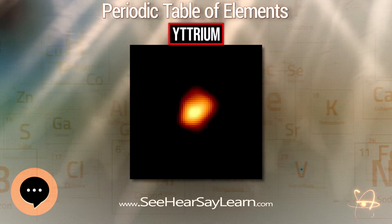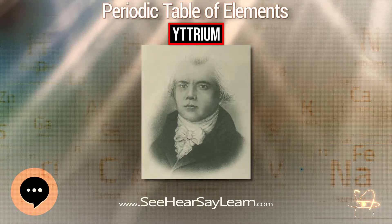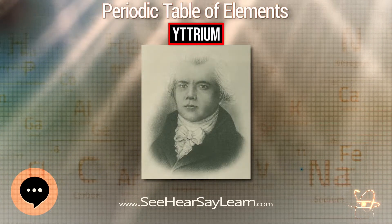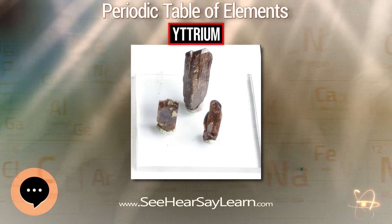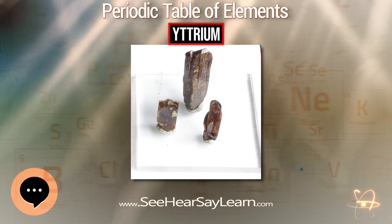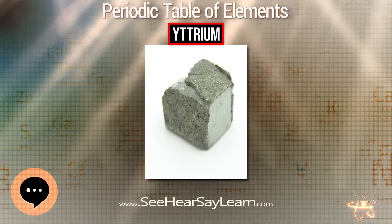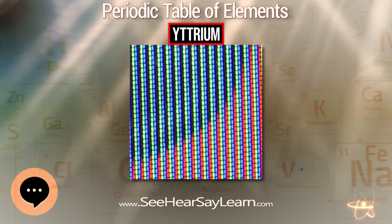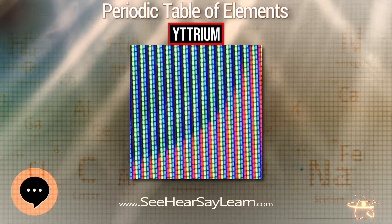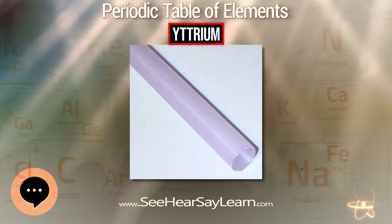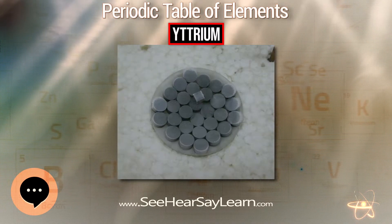Yttrium is used in the production of a large variety of synthetic garnets, and yttria is used to make yttrium iron garnets, which are very effective microwave filters. Yttrium iron, aluminium, and gadolinium garnets — Y₃Fe₅O₁₂ and Y₃Al₅O₁₂ — have important magnetic properties; YIG is also very efficient as an acoustic energy transmitter and transducer. Yttrium aluminium garnet has a hardness of 8.5 and is also used as a gemstone in jewelry. Cerium-doped yttrium aluminium garnet crystals are used as phosphors to make white LEDs.